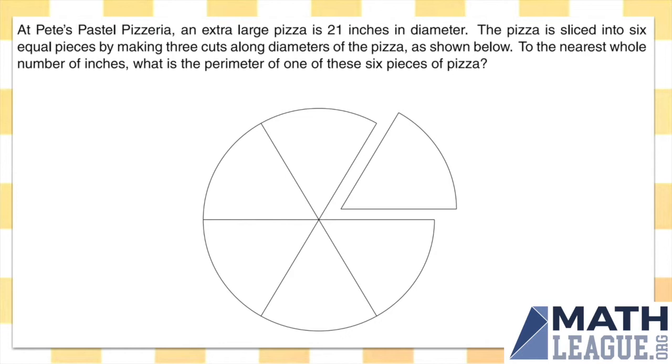We're going over problem number 23. At Pete's Pastel Pizzeria, an extra large pizza is 21 inches in diameter. The pizza is sliced into six equal pieces by making three cuts along the diameters of the pizza, as shown below. To the nearest whole number of inches, what is the perimeter of one of these six pieces of pizza?